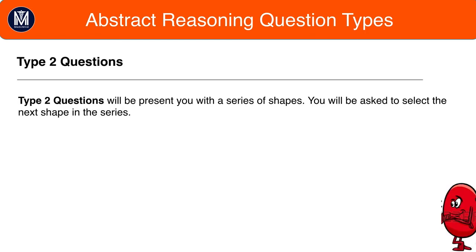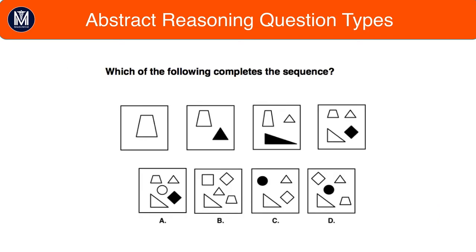Type two questions tend to be more rare and in these questions you get a series of shapes in the sequence and are asked to select the next shape in the series. So let's have a look at this example and try to work out the pattern here.